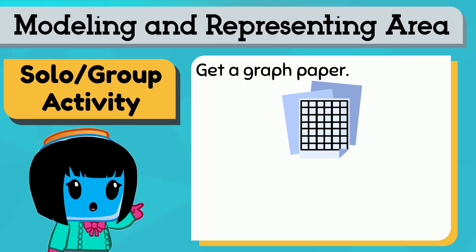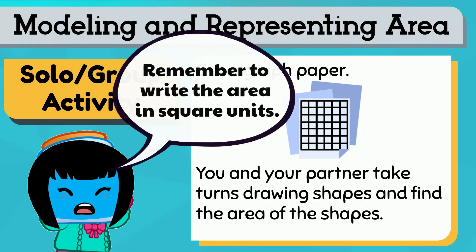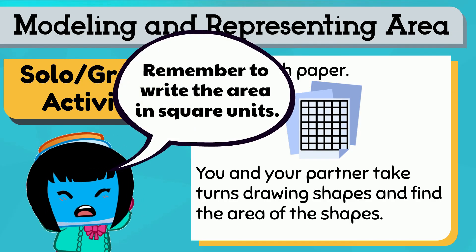You can do this with a partner or on your own. Grab some graph paper. That's the one with the tiny squares. You and your partner can take turns drawing shapes and having each other find the area. Remember to write the area in square units.